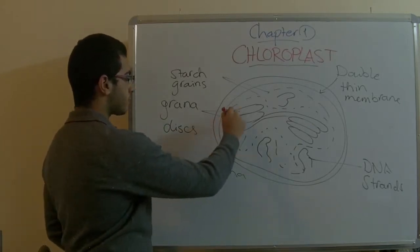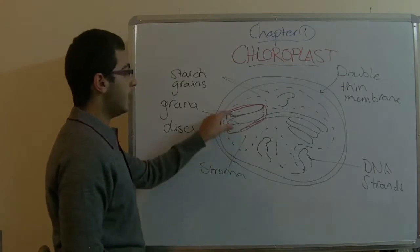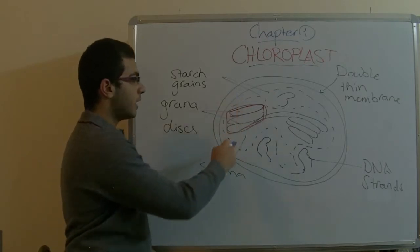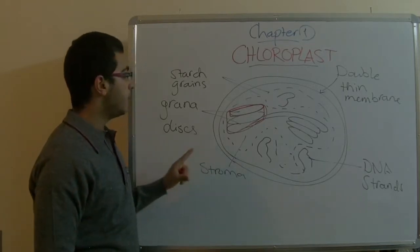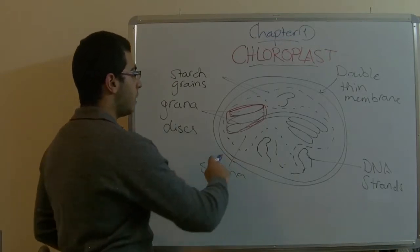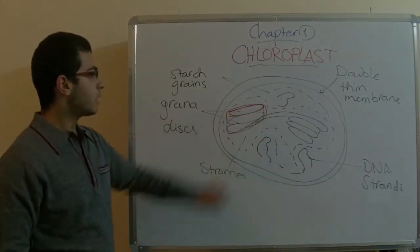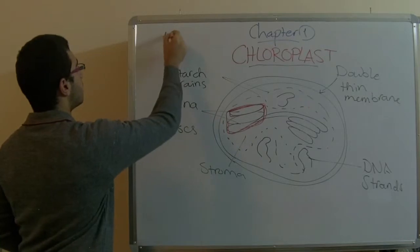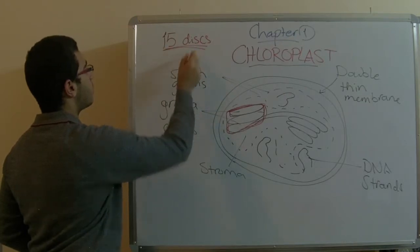Here we have the properties of the grana. This thing is 5 nanometers or 5 microns wide, and the diameter is 0.5 microns, and its width is 0.7 microns. The grana discs are all enclosed in connective tissue, and each granum consists of 15 or more discs, a pile of 15 or more discs.